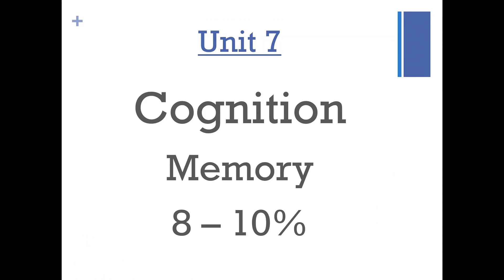That brings us to Unit 7, which will get into cognition and memory. There are a lot of things in Unit 7 that people will have questions about: the different types of memory, the different levels of memory storage and rehearsal, interference, memory recall, and things like that. Stay tuned for Unit 7.